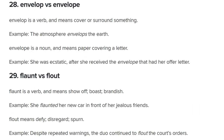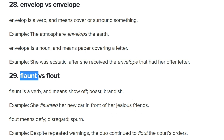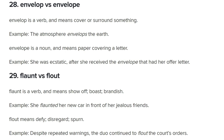Flaunt versus flout. To flaunt something is to show it off — you're boasting, taunting, brandishing. 'She flaunted her new car.' To flout something is to break the rules, like a lout — a thug or vagabond. 'He flouted the rules by not turning up to his court appearance.' Their example: 'Despite repeated warnings, the duo continued to flout the court's orders' — breaking the rules, not following them. A great pair of words to know.